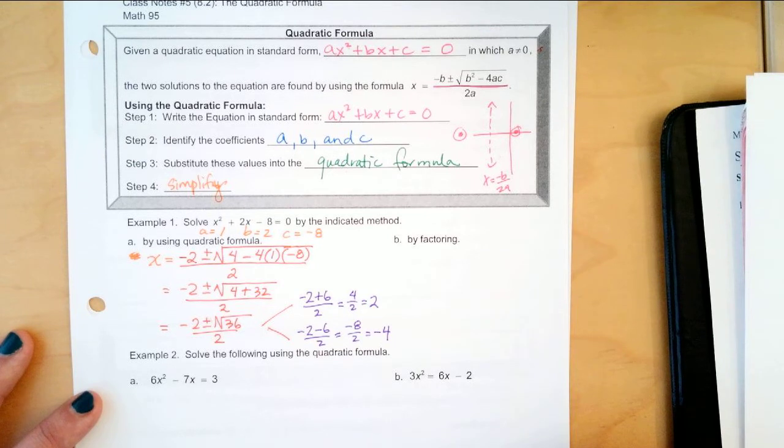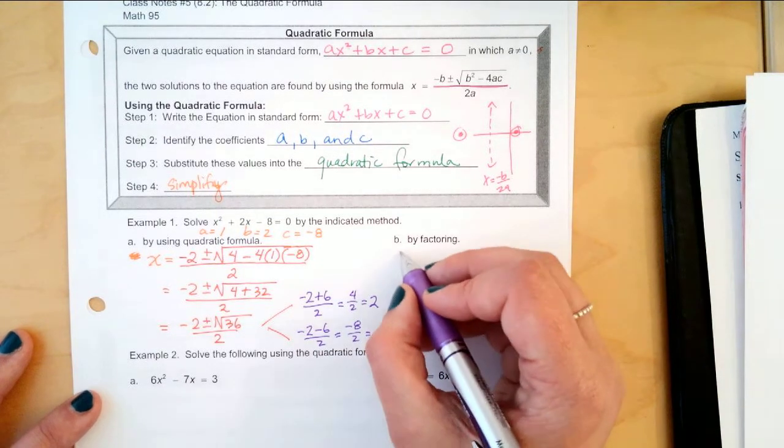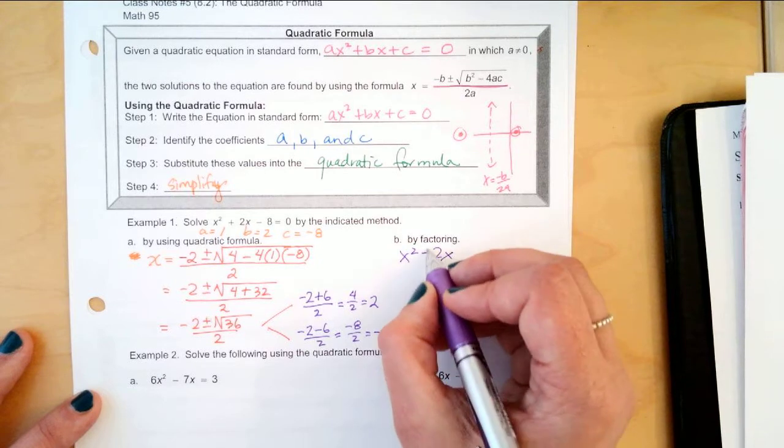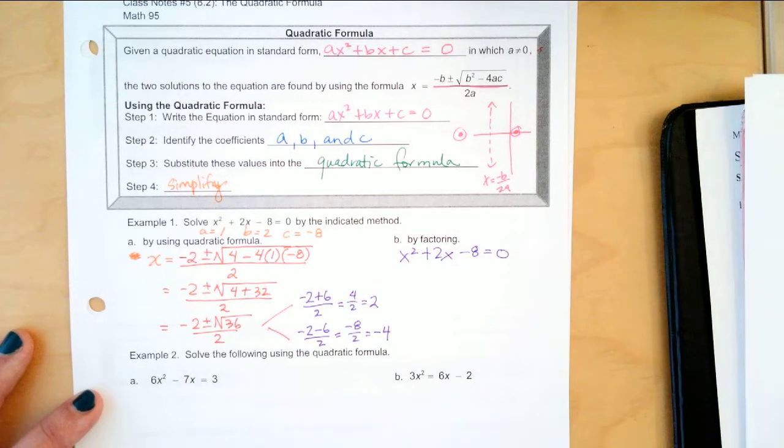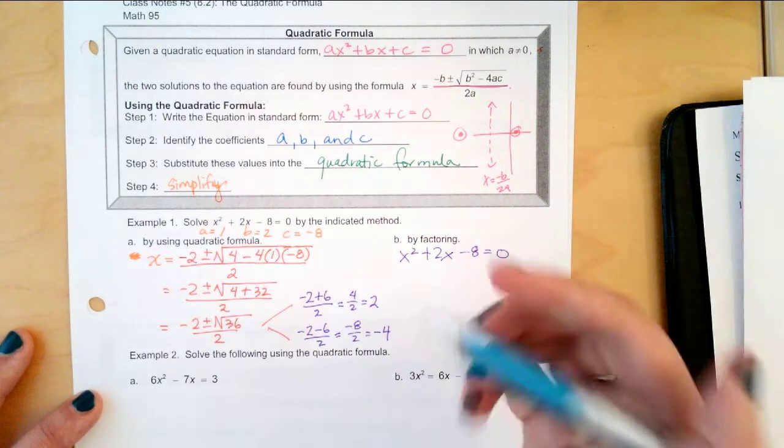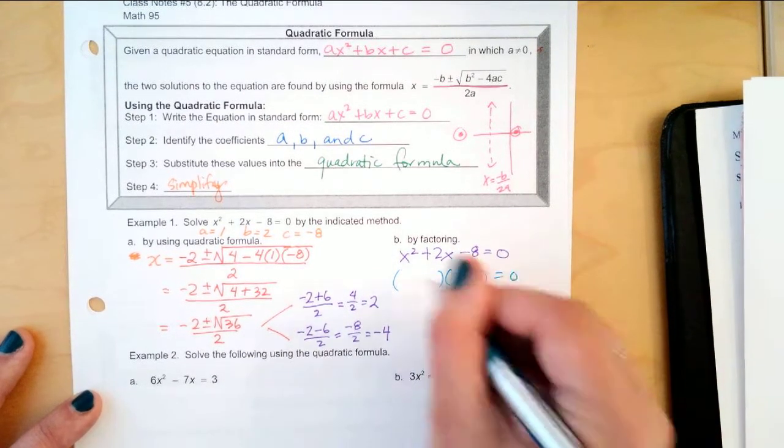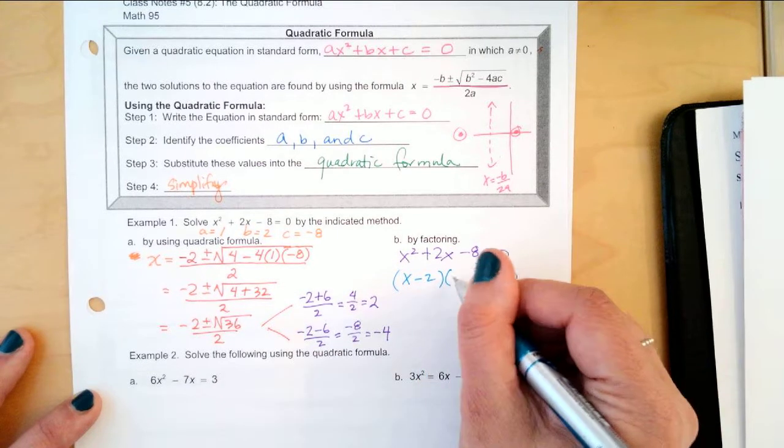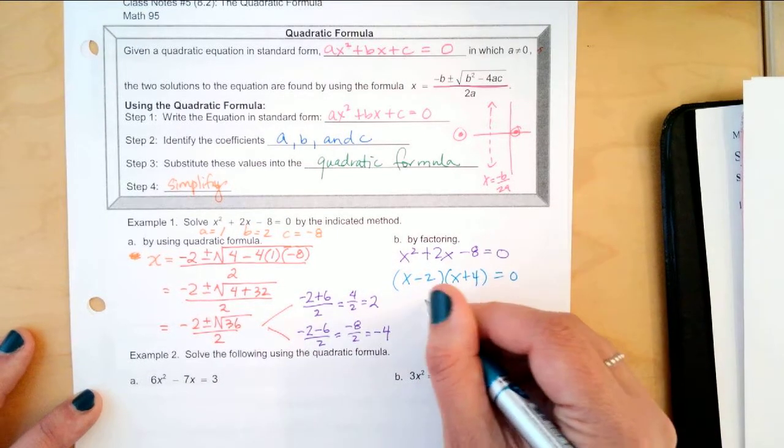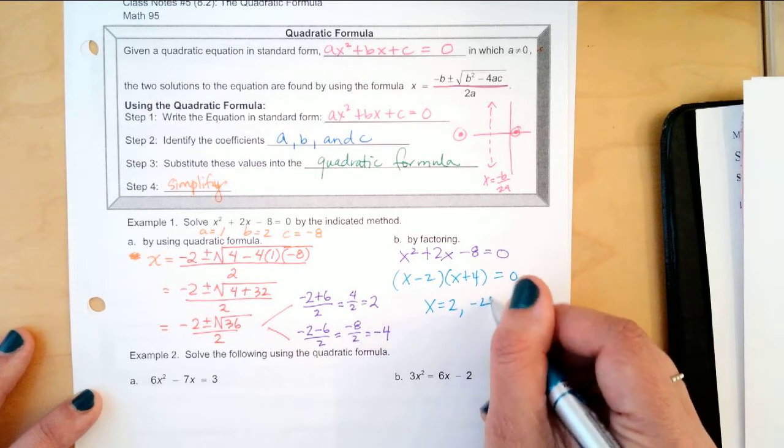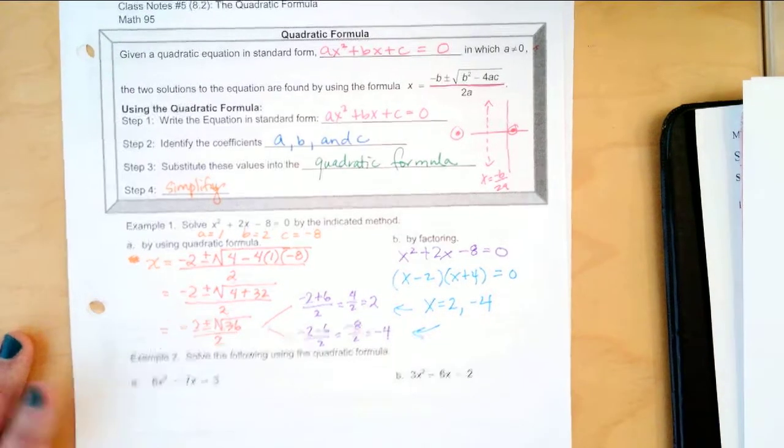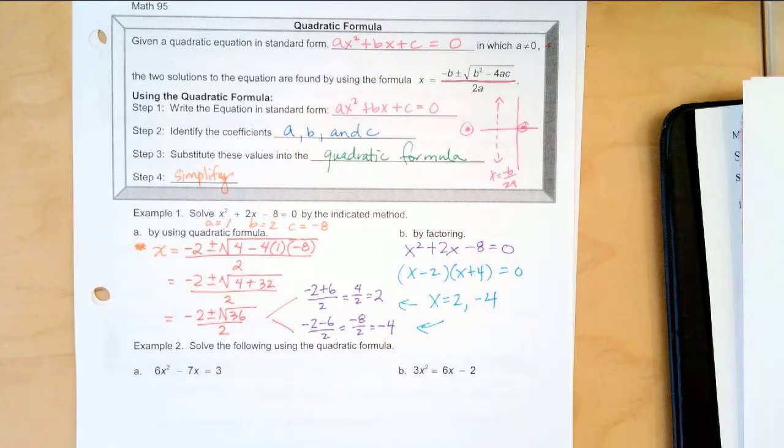Am I doing this right? How would we solve this by factoring if I had x squared plus 2x minus 8 equals 0? Who can tell me the factors? x minus 2, x plus 4 and what are my solutions? Oh, look at that. Those are the exact same answers we got. So, which was easier? Oh, I love that you said it was factoring. Yes.